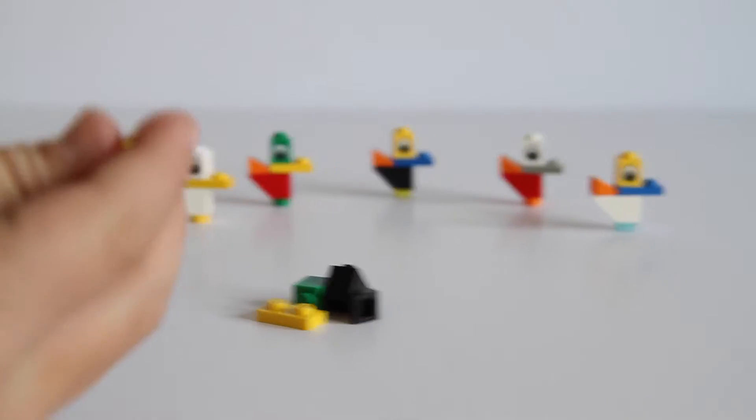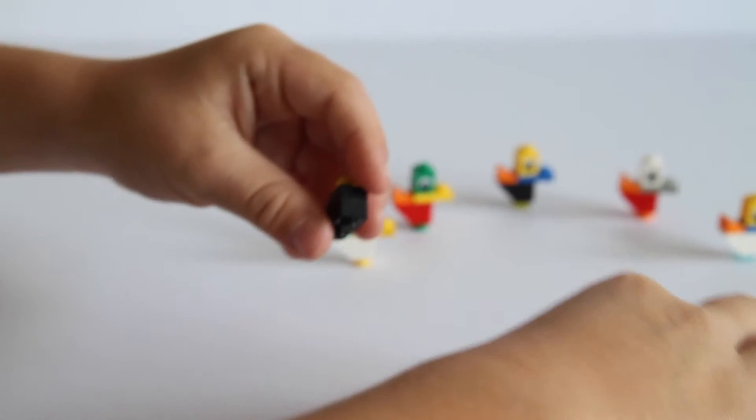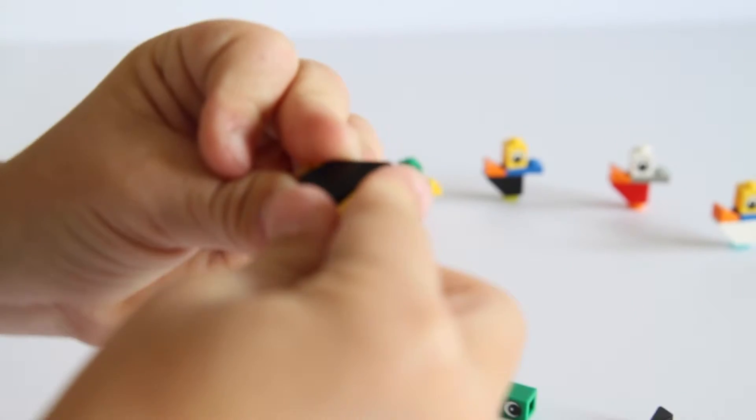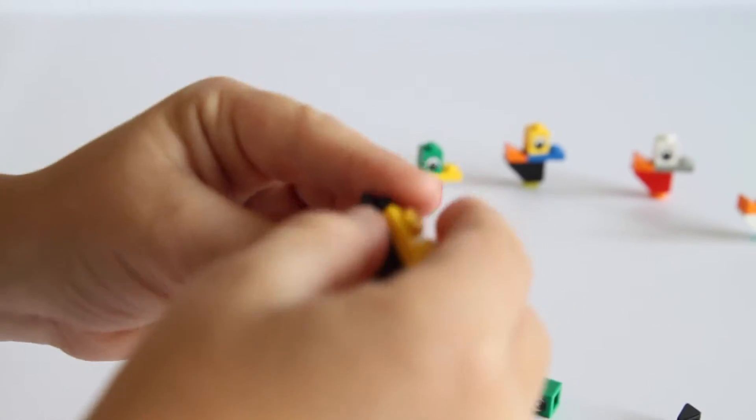First you take your yellow piece, then you grab your black piece, then you stick it on the bottom of your black piece, then you grab your yellow piece and put it on the back of your black piece.